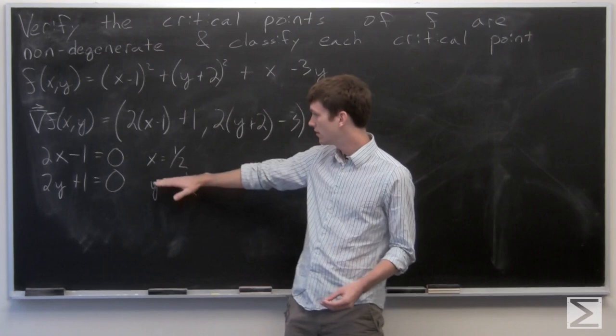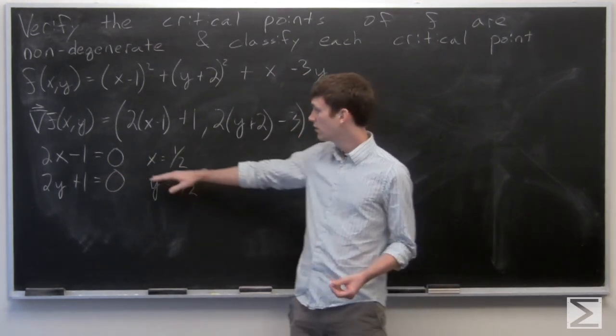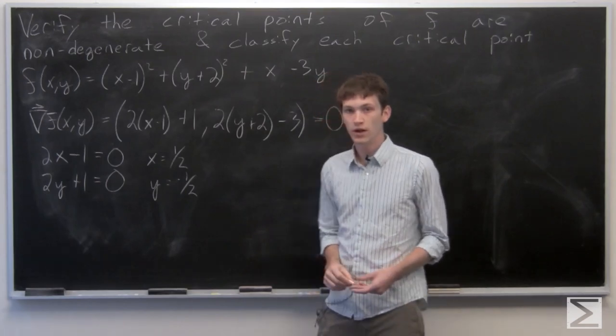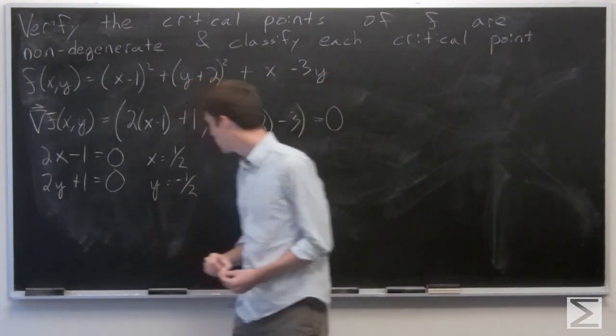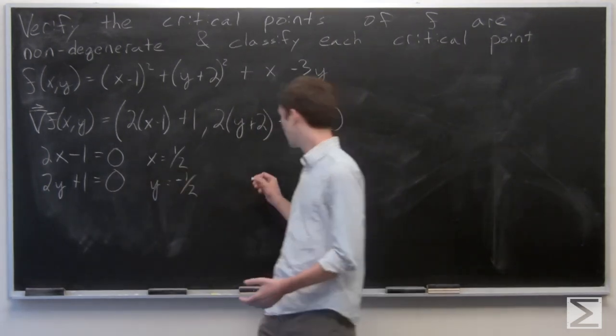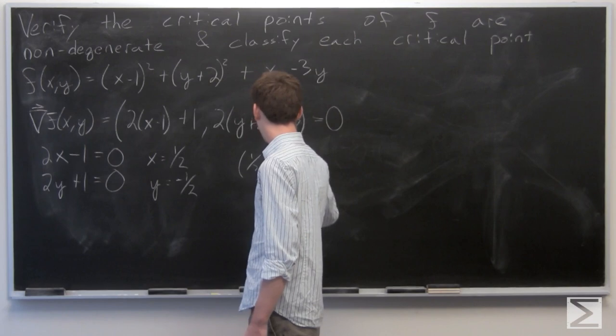And we have that the gradient vector of f is equal to 0 if x is equal to 1/2 and y is equal to -1/2. So we have one critical point at the point (1/2, -1/2).